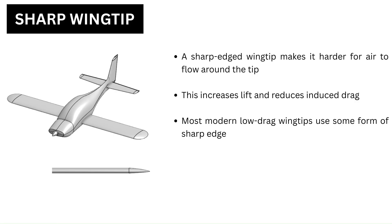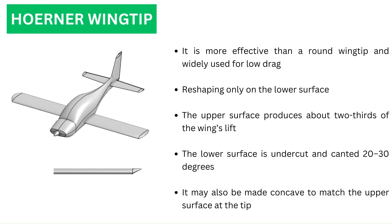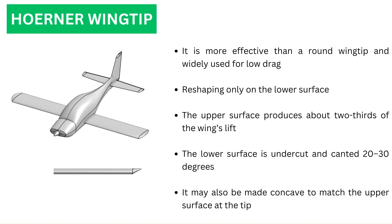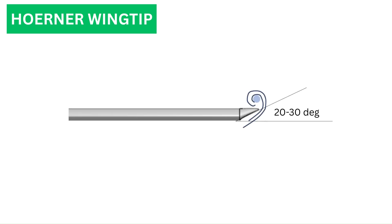Sharp wingtip: a wingtip with a sharp edge makes it more difficult for the air to flow around the tip, which increases lift and reduces induced drag. Most of the new low-drag wingtips use some form of sharp edge. Horner wingtip: the Horner wingtip is named after the German aerodynamicist Sighard Horner, who showed its effectiveness to be superior to that of the round wingtip. It is a widely used low-drag approach. It has a sharp edge, but all of the reshaping is done on the lower surface. The upper surface continues its original airfoil shaping all the way to the tip, which is important because the upper surface of the wing produces two-thirds of the total lift. The lower surface is undercut and canted approximately 20 to 30 degrees to the horizontal, and sometimes made concave to match the upper surface where they meet at the tip.